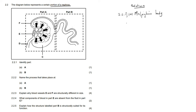And then part B — they say we should also identify it. You don't have to explain anything, just name which part it is. Part B is the region that follows after the Malpighian body, and that is the proximal convoluted tubule. So your first two marks are the Malpighian body and the proximal convoluted tubule.